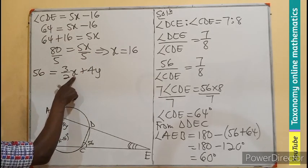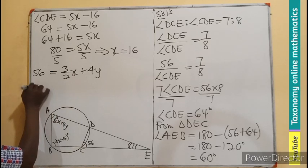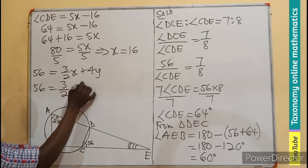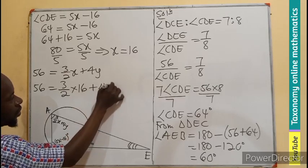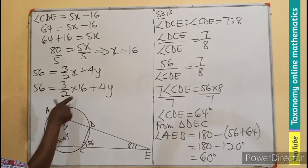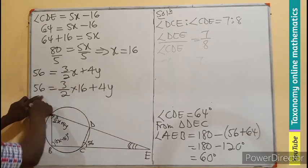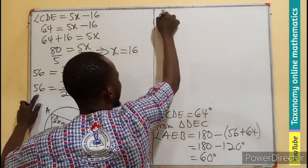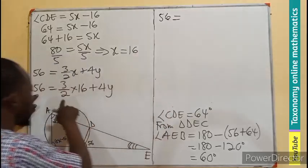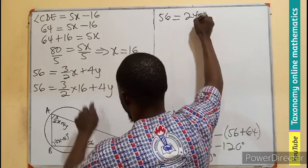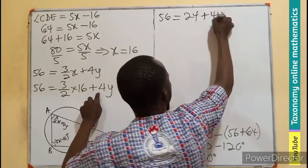So what do I do? I substitute the value of x. 56, 3 on 2 times 16 plus 4y. So if you substitute, this is going to be computed. So right away from here, I'll be having 56 equals to 3/2 of 16 times 3, 24 plus 4y.